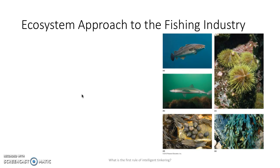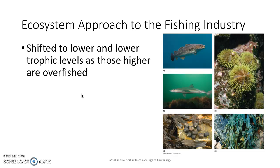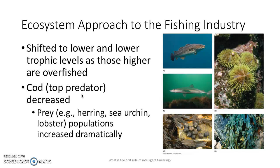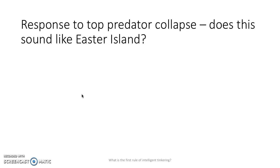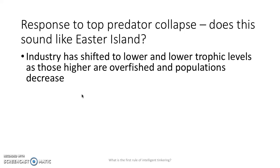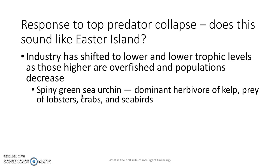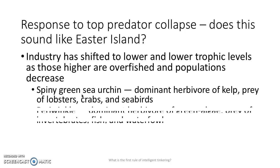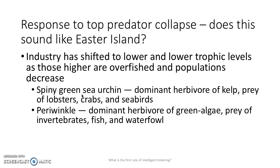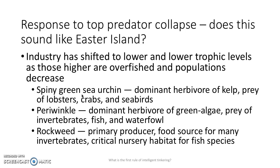Taking an ecosystem approach — these are the various levels of the ecosystem you might look at. Industry has been shifting to lower and lower trophic levels as those higher up are overfished. Cod is in the top fish there in the upper right-hand corner. As the top predator decreases, prey populations — herring, sea urchin, lobster — increase dramatically. Fishermen then focus on those species that are increasing. The spiny green sea urchin, a dominant herbivore in kelp beds and prey of lobsters, crabs, and seabirds, is now being harvested. Periwinkle, which eats green algae and rockweed — those are the things we've shifted to eating.